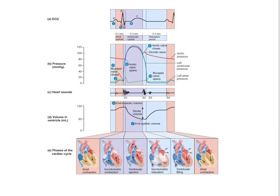Note that during this period, the atria would be repolarizing and thus undergoing atrial relaxation. This is all included in the QRS complex — it's masked by the electrical activity of the ventricle, and it's not actually indicated as a separate phase, but it would be occurring during the same time period as ventricular systole.